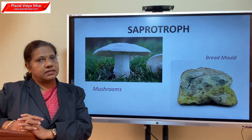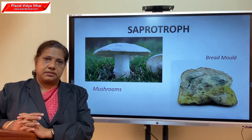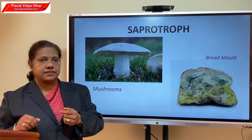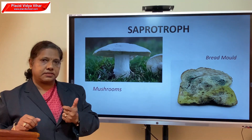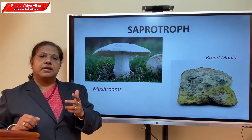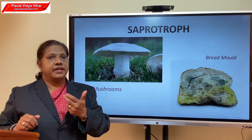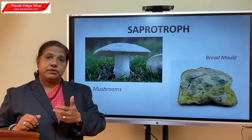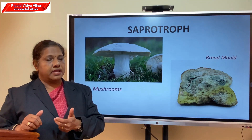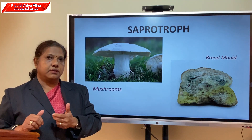Next is the saprophytic mode of nutrition. Mushrooms can be seen in vegetable markets and growing on rotting wood, especially during the rainy season as umbrella-like fluffy patches. Mushrooms are white because they have no chlorophyll — they are non-green plants. Since they cannot do photosynthesis, they derive their nutrients from rotting wood by secreting digestive juices and absorbing nutrients in solution form.